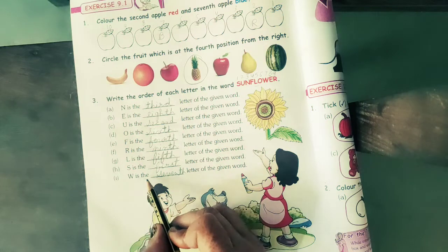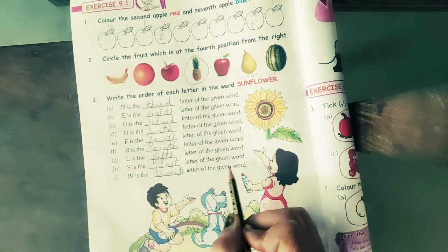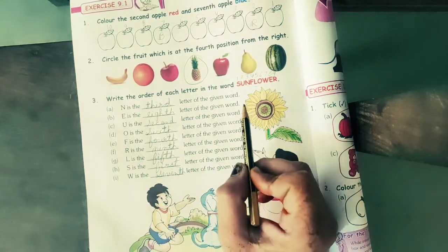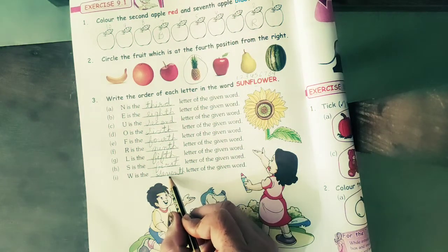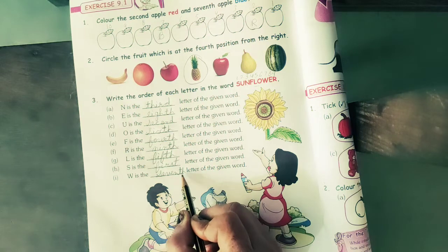W is the letter of the given word. W is at which number position? Seven. The spelling of seven is S, E, V, E, N, T, H.